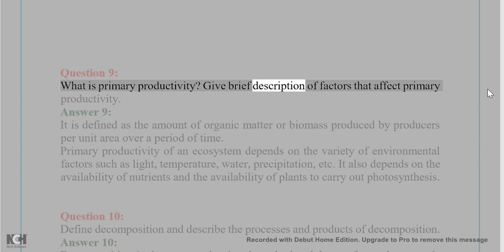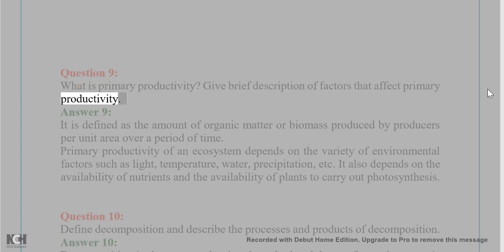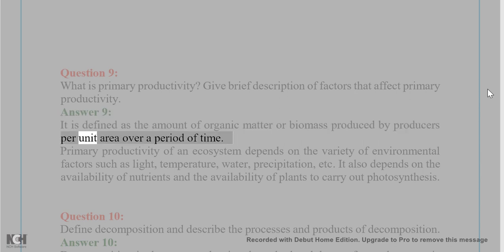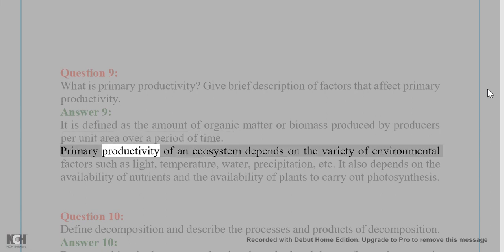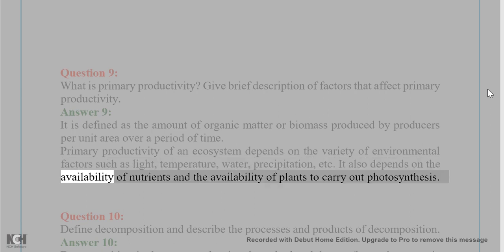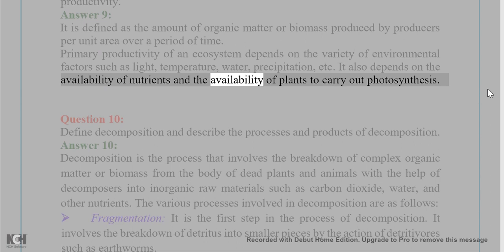Question 9: What is primary productivity? Give a brief description of factors that affect primary productivity. Answer 9: Primary productivity is defined as the amount of organic matter or biomass produced by producers per unit area over a period of time. It depends on a variety of environmental factors such as light, temperature, water, and precipitation, as well as the availability of nutrients and the ability of plants to carry out photosynthesis.